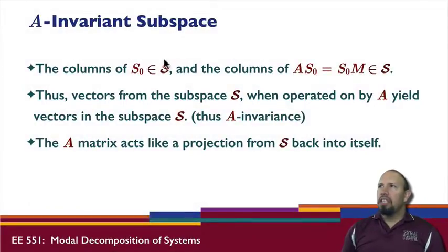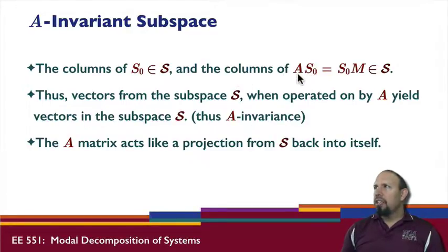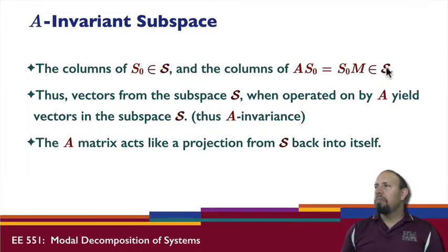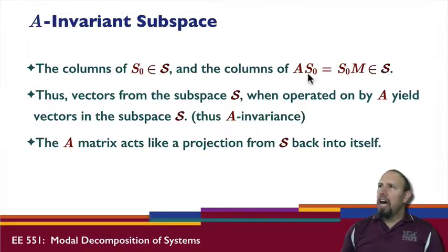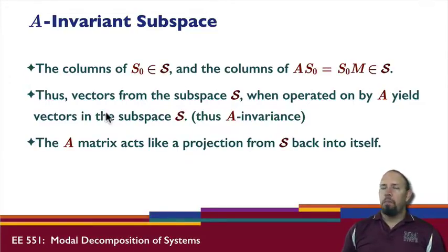The columns of S₀ are in the subspace. If we look at the columns of A times S₀, since A times S₀ equals S₀ times M, the individual columns are in fact in the same subspace. That's the concept of an A-invariant subspace: I start in the subspace S and I end up in the subspace S — it's like a projection onto its own space.